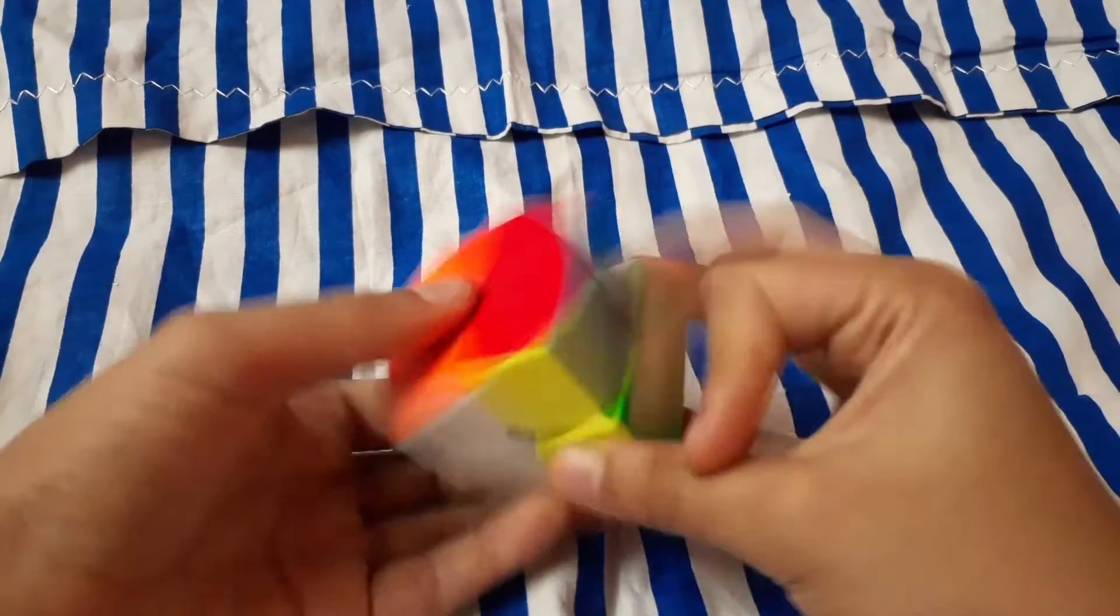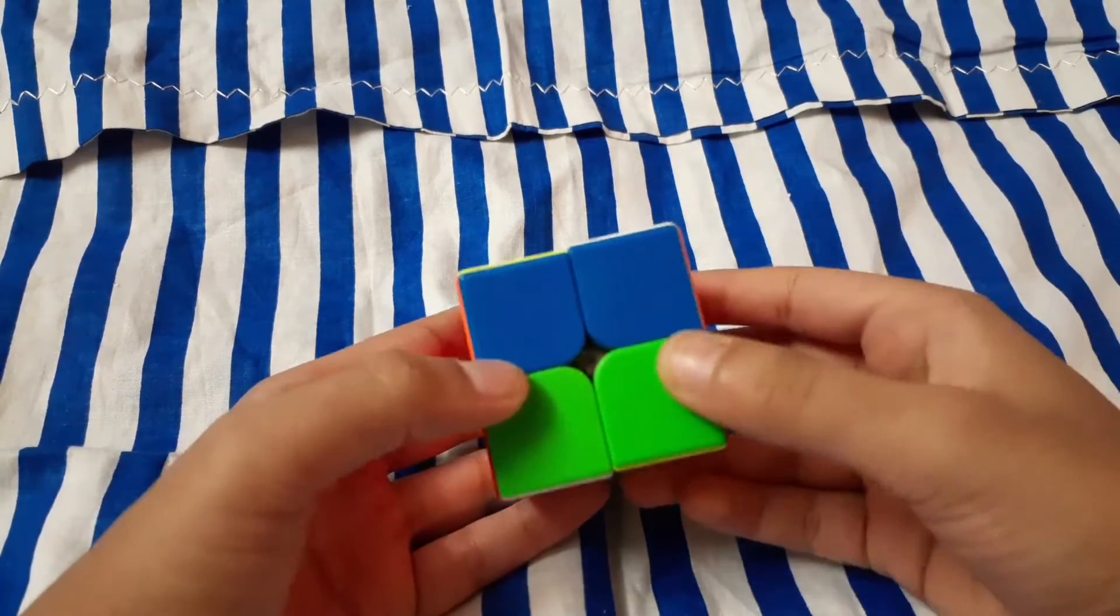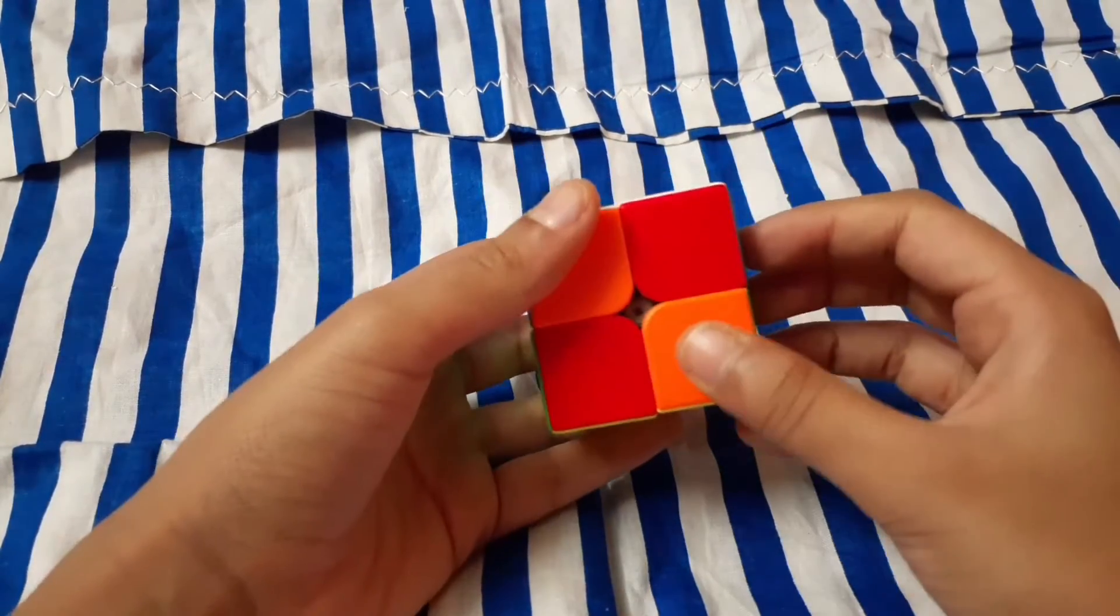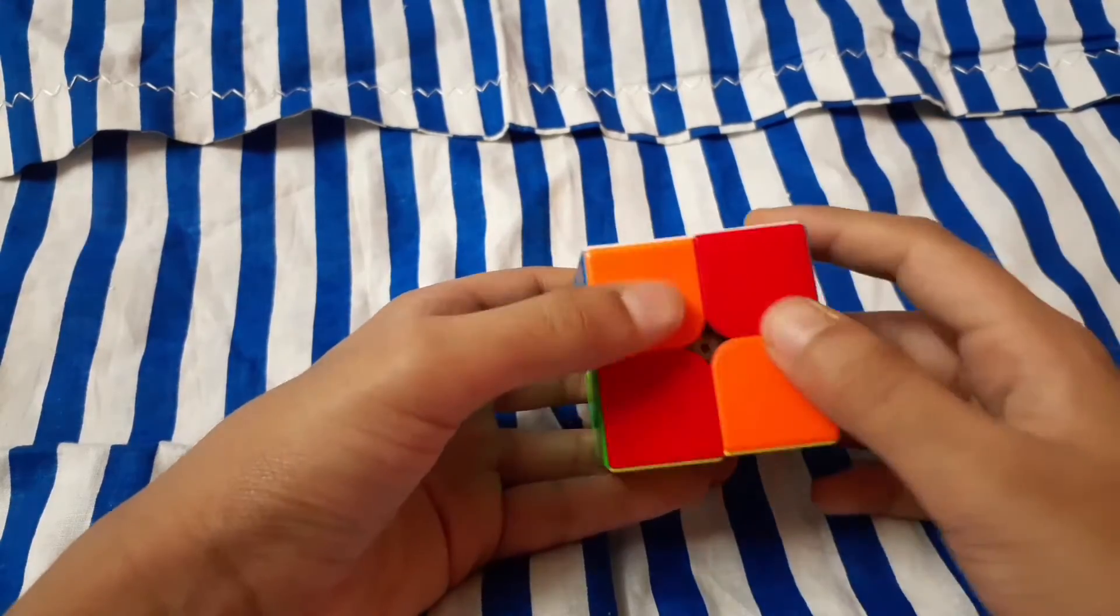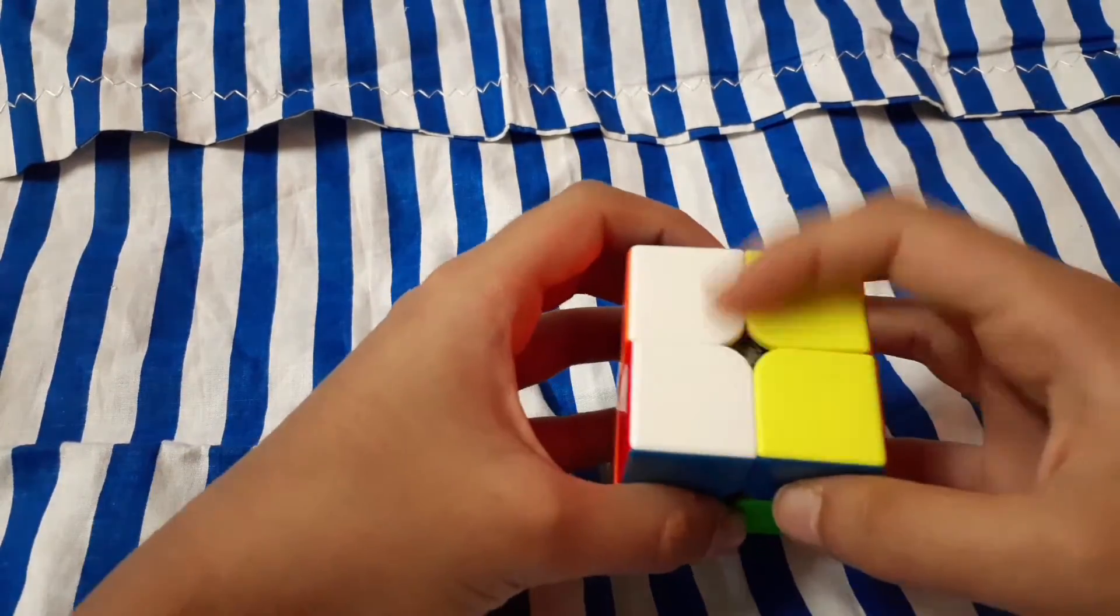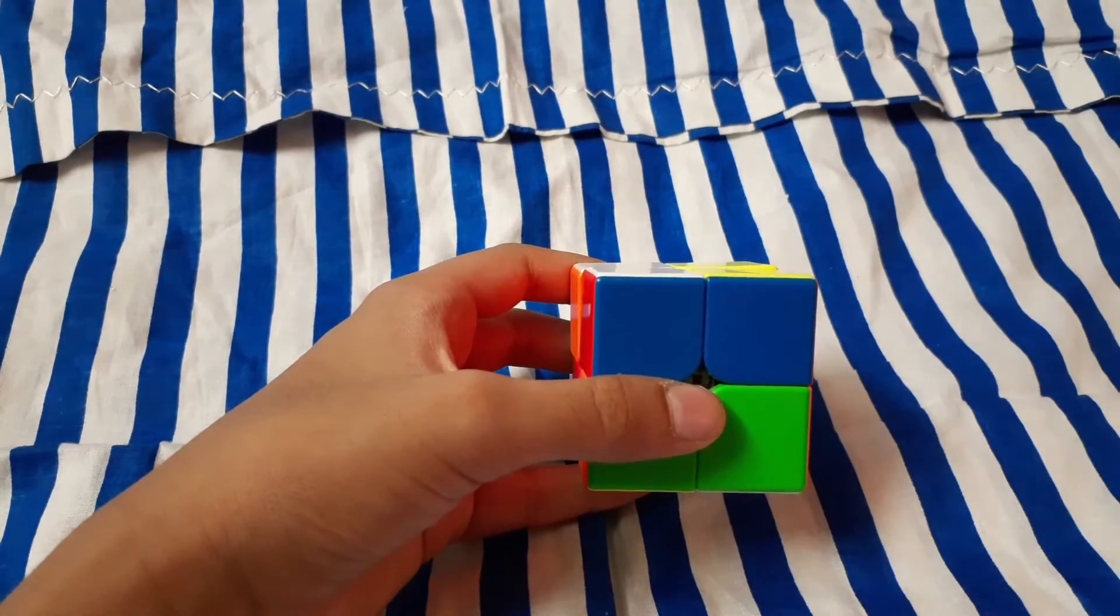Now let's look at color shades. The color shades are bright. Blue is dark, green is light. Red is dark and orange is light. White is light and yellow is dark, so it is easy to recognize.